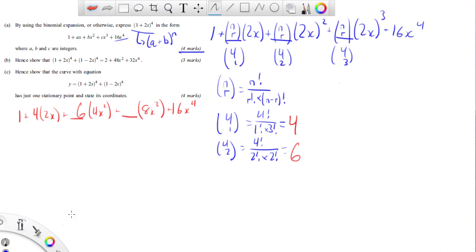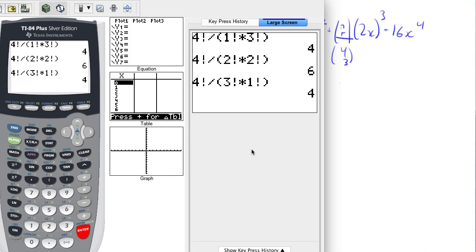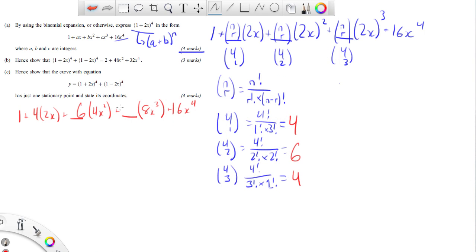And finally, the last coefficient is going to be 4 choose 3. So that's going to be 4 factorial over 3 factorial times 4 minus 3, which is 1 factorial. And so when I plug this in, this is going to be 3 and this is going to be 1. And again, we have a 4. So 4, 6, 4.